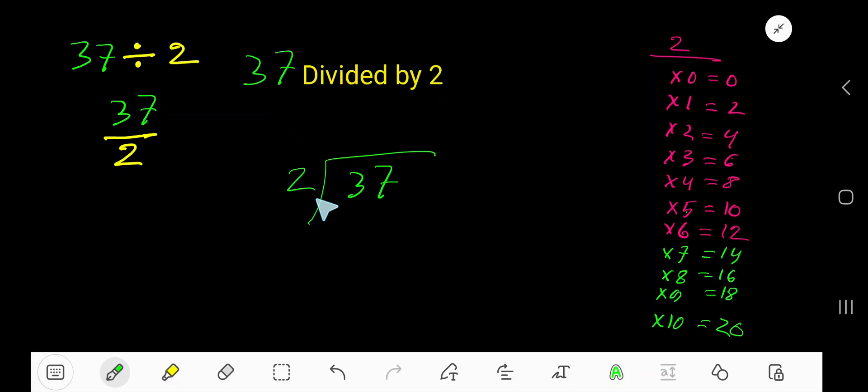37 divided by 2. 2 goes into 3 how many times? 1 time. 1 times 2 is 2. Subtract, bring down this 7. 2 goes into 17 how many times? 8 times. 8 times 2 is 16.